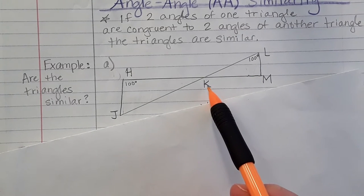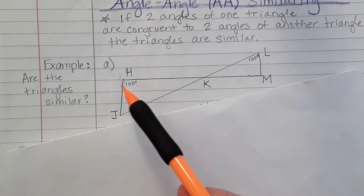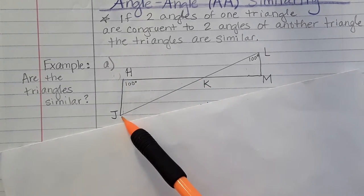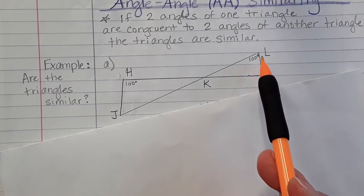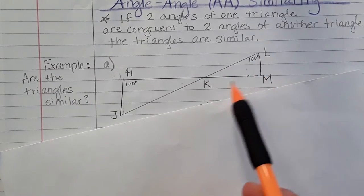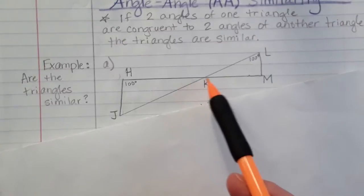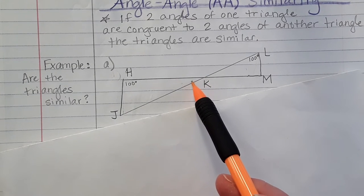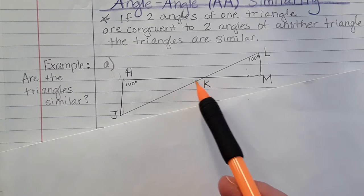Angle K. We cannot say just angle K, but we can say angle HKJ and we could say angle LKM. And I know that these are congruent because they are vertical. Remember, vertical angles are across from each other.